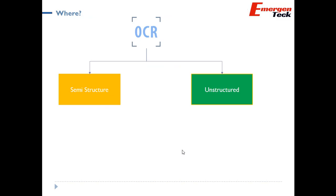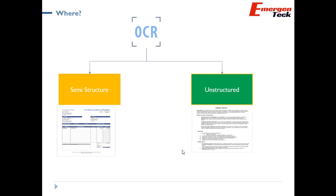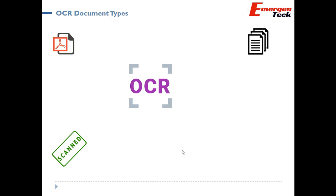The bigger question is what kind of documents OCR can help you extract. It could be semi-structured — for example, any kind of UIs or BINs that come under the semi-structured format. Or it could be unstructured — any kind of contract or legal document that is purely free-flowing text. OCR can scan native PDFs, scanned documents, Word documents, and emails — whether the data is in an attachment or in the body.